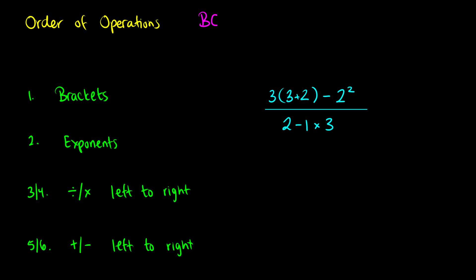Some people learn an abbreviation called BEDMAS, some people use PEMDAS — there are a lot of different acronyms for these. But the general idea is the same no matter what: first you do everything inside the brackets. On the example on the right, I have 3 times (3 plus 2) minus 2 squared, all over (2 minus 1) times 3. The order of operations says we should do the brackets first.